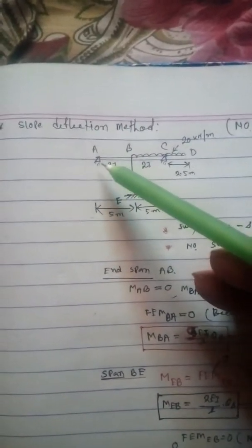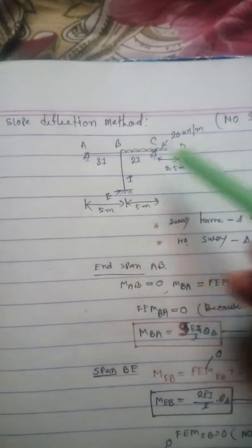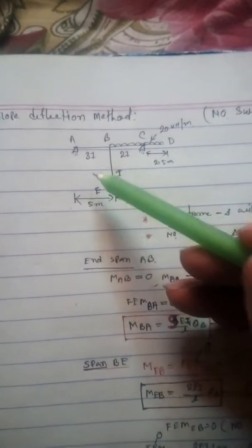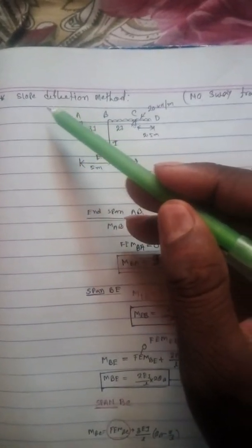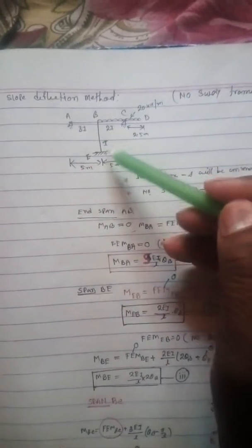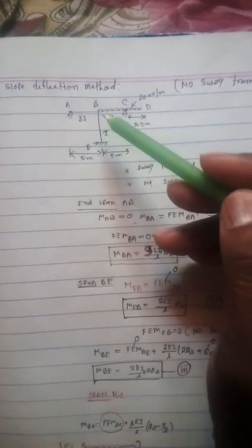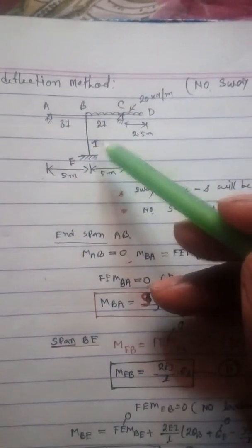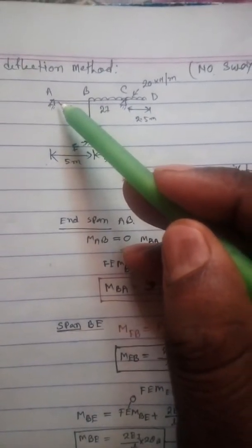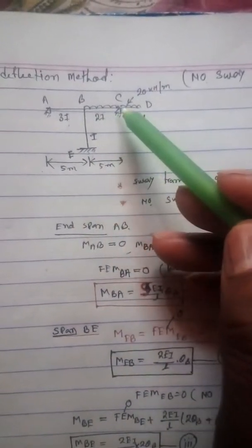Good morning friends. Today I'll discuss a problem related to the slope deflection method — specifically a frame structure. In my previous lecture I discussed a beam using slope deflection, and now in this lecture I will discuss how to solve a frame using the slope deflection method. I have taken here a frame ABCD, and it is perfectly rigid, meaning no sway will take place due to the applied force.